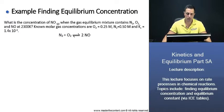Finding the equilibrium concentration. What is the concentration of nitric oxide when the gas equilibrium mixture contains nitrogen, oxygen, and nitric oxide at 2300 Kelvin? Known molar gas concentrations are for oxygen 0.25 molar, for nitrogen 0.5 molar, and the equilibrium constant is 1.4 times 10 to the power of negative 4.